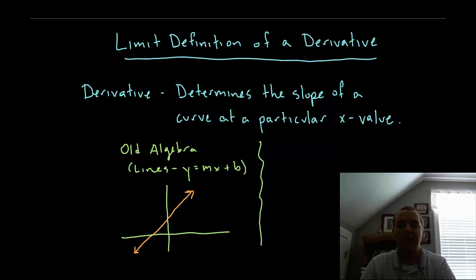One of the primary objectives in calculus is to figure out how to determine the slope of a curved line. Now we've heard the word slope before when we studied algebra, but I'm guessing you only did it in the context of a straight line.